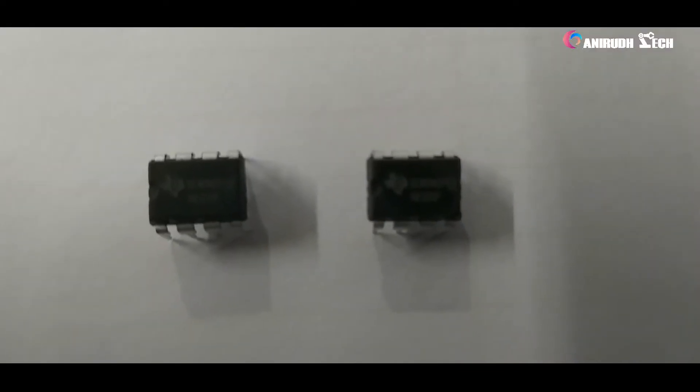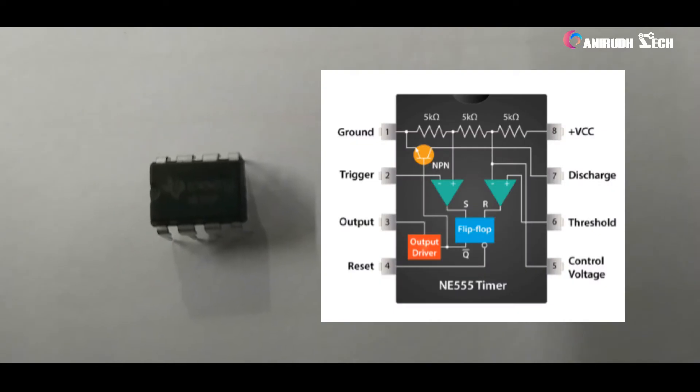Our 555 IC is an 8-legged IC. It is named 555 from the three 5kΩ resistors connected in a voltage divider pattern.